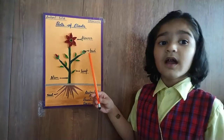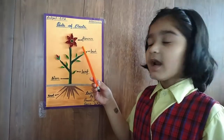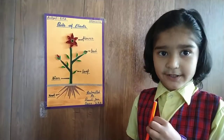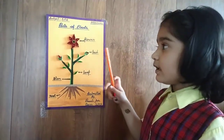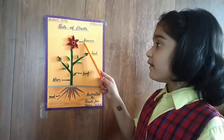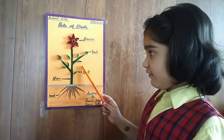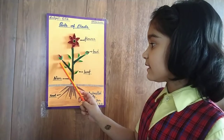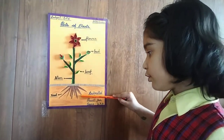Plant has different parts. This is flower. This is leaf. This is bud. This is stem. This is root.